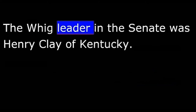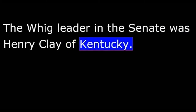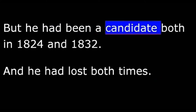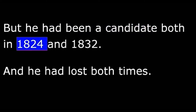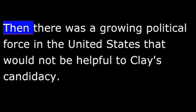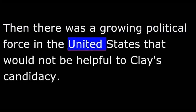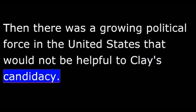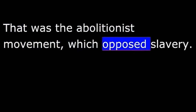Harry Monroe and Kay Gallant describe how the Whigs saw an excellent chance in the upcoming election. The Whig leader in the Senate was Henry Clay of Kentucky. Clay told a friend he was sure he would be called on to serve as the Whig candidate for president. Other Whig leaders were not so sure. They did not question Clay's ability to be president, but he had been a candidate both in 1824 and 1832, and he had lost both times. Then, there was a growing political force in the United States that would not be helpful to Clay's candidacy.